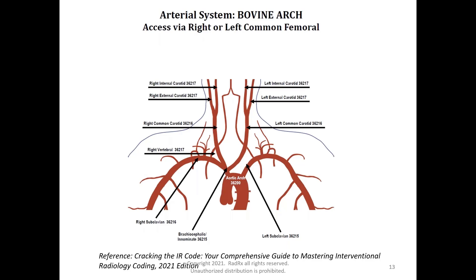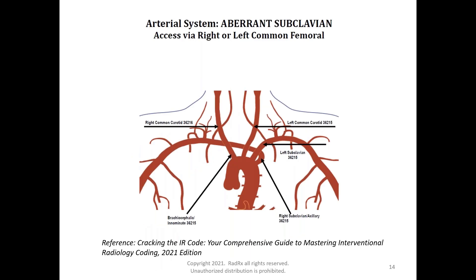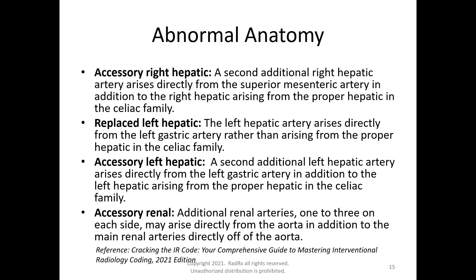With the aberrant subclavian, we now have four vascular families coming off the aorta. This is just here for your reference — we're not going to get into coding for abnormal anatomy today; that's more advanced. Just know that abnormal anatomy is going to change your vascular families and vascular orders when assigning your catheterization code. We're going to start with the basics.